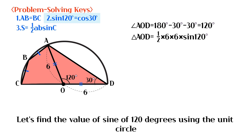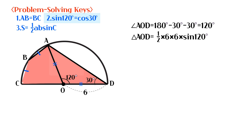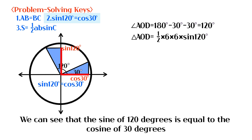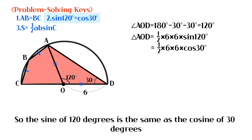Let's find the value of sine of 120 degrees using the unit circle. We can see that the sine of 120 degrees is equal to the cosine of 30 degrees.